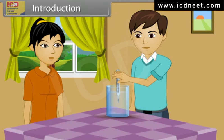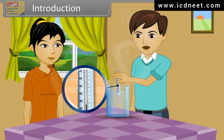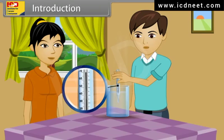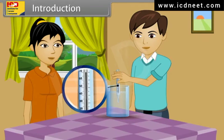Listen, thermometer has mercury in it. When we put the thermometer into hot water, the heat from the water causes the expansion of the mercury. When mercury stops at a point, that point indicates the temperature of the water. It is quite interesting and I want to know something more about it. Students, today we will learn more about the thermal properties of matter.